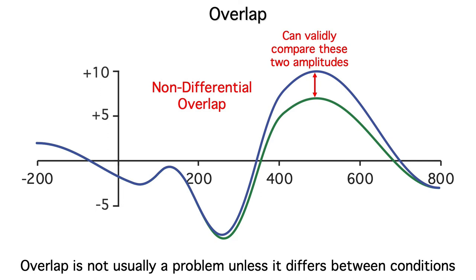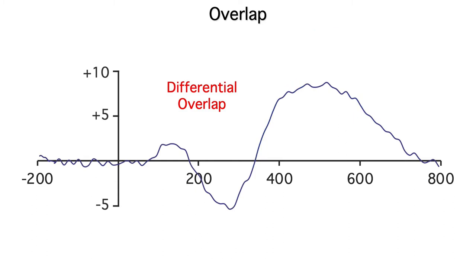Overlap isn't usually a problem unless it differs between conditions, which we call differential overlap. Here's an example. One condition has very little overlap from the previous trial. The other is identical, except that it contains overlapping activity that distorts the baseline.